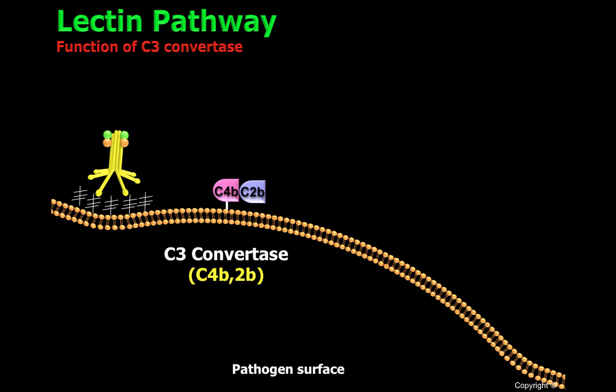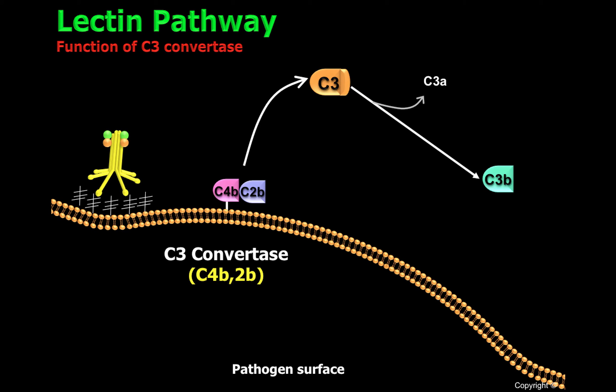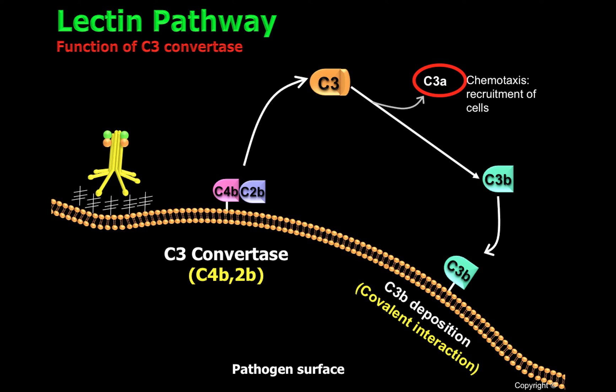The C3 convertase will be able to clip C3 found in plasma, generating C3A and C3B. C3A is an important chemoattractant molecule that attracts neutrophils and other cells to the site of infection. When C3B is close enough to the cell's surface, it will attach covalently to that surface. This process is called C3B deposition.